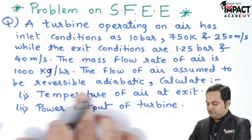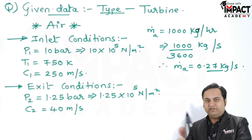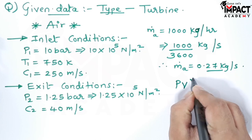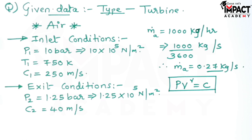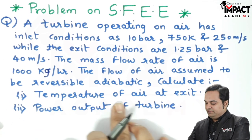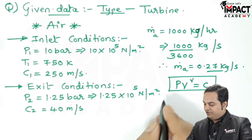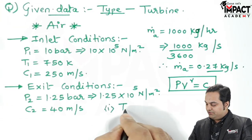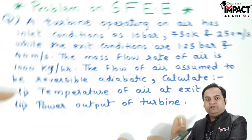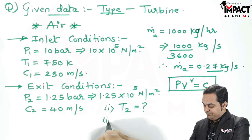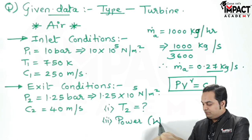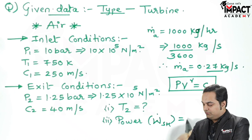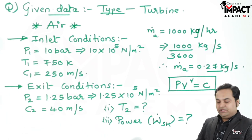The flow of air is assumed to be reversible adiabatic. It means the process is reversible adiabatic, governed by the law PV raised to gamma equal to C — the adiabatic or isentropic process. We need to calculate: the temperature of air at exit, denoted T2, and the power output of the turbine, which is the shaft work denoted by Ẇ_sh.